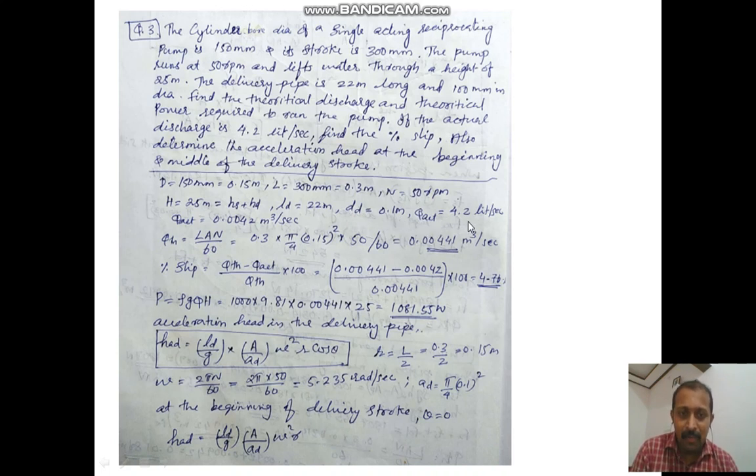The actual discharge is 4.2 liters per second. To convert to meter cube, divide by 1000.